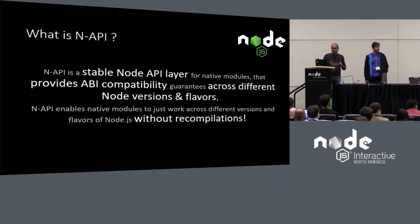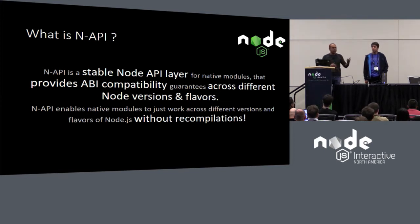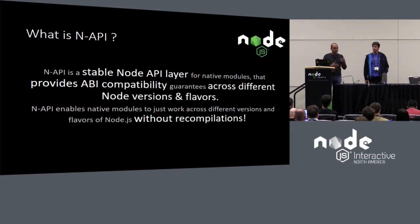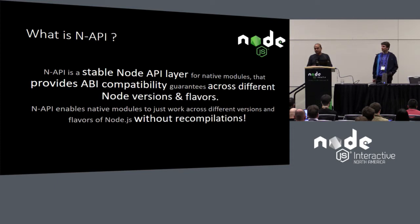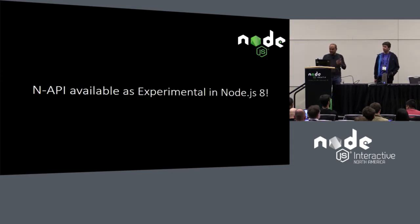The breakage impact means module maintainers have to spend time and cost maintaining and updating modules for newer version support. Also, people who consume these modules in production systems are hesitant to upgrade to the latest versions of Node because of this fear of compatibility. That's the kind of problem NAPI is trying to solve.